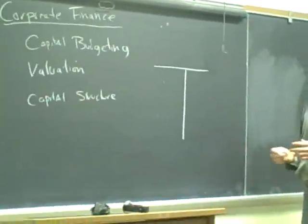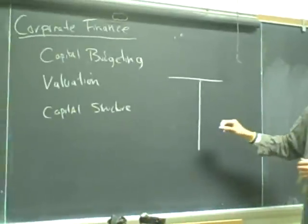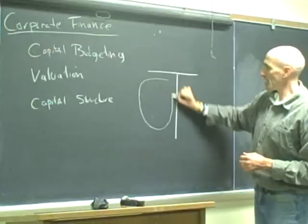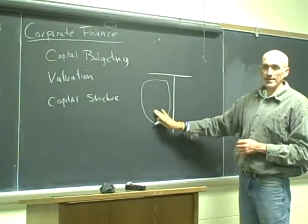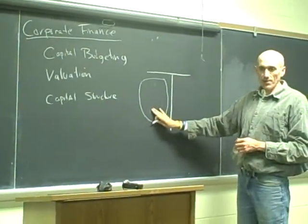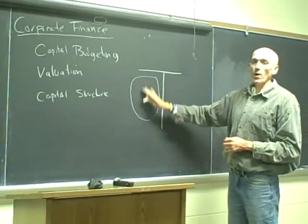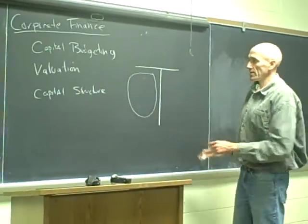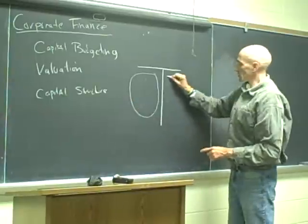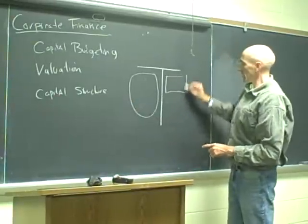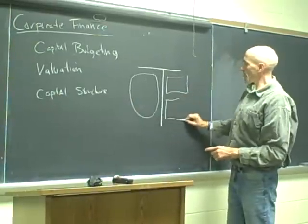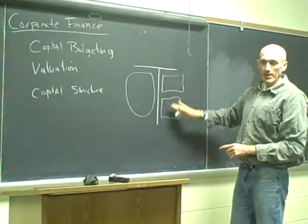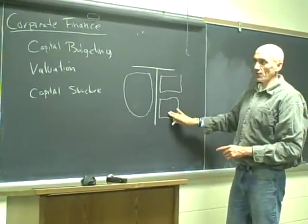In accounting format, what we are looking at: capital budgeting and valuation is looking at the asset side of the balance sheet — what assets do we want on this balance sheet? Capital structure is the question, how do we pay for it? Do we pay for it with debt, or do we pay for it with equity?